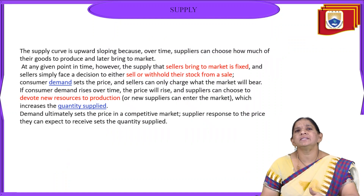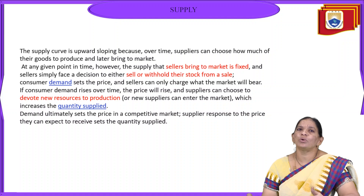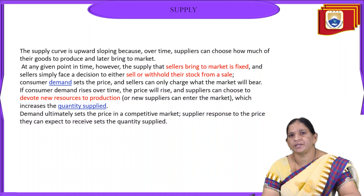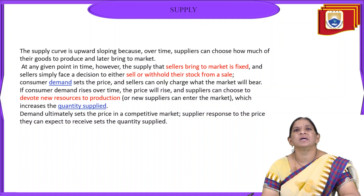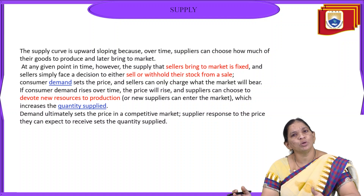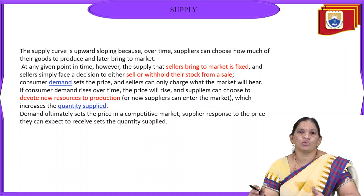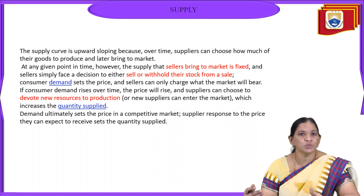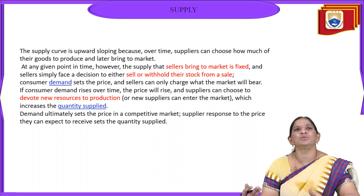What are the reasons for the upward sloping of the supply curve? The supplier wants to choose how much goods to produce and bring to the market. When he wants to supply goods, he first decides how much to produce. Once the price is increasing, the producer wants to produce more goods to gain profits from the market.